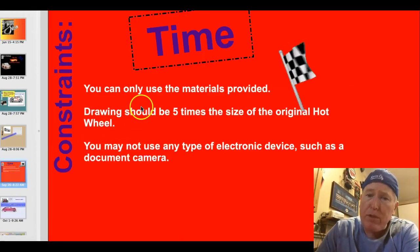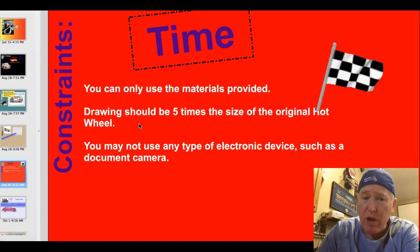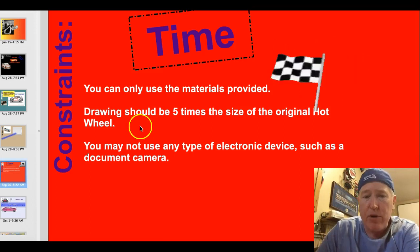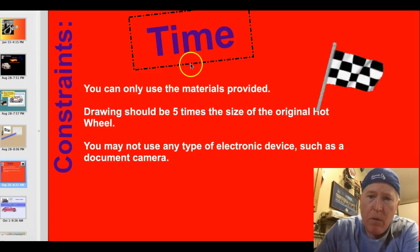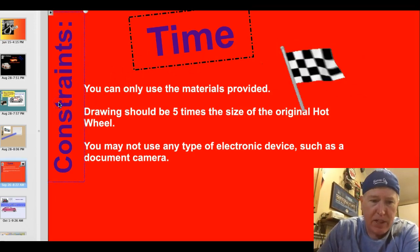Constraints are pretty straightforward. You can only use materials provided. The drawing should be five times the size of the original Hot Wheel car. You may not use any type of electronic device such as the dot camera in your room to complete this activity. Watch the time. Time will be your major constraint here. You only have about 35 minutes to get this done.